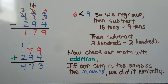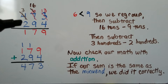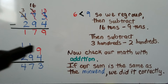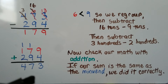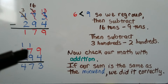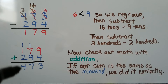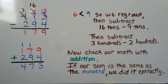Now we can check our math with addition. We can add 179 plus 294 and see if we get 473. 9 plus 4 is equal to 13 — we regroup the 10 and put the 3 in the ones place. 1 ten plus 7 tens plus 9 tens is 17 tens. We can group 10 tens into the hundreds place and put the 7 tens down here. We add the hundreds — we have 400, and it's the same as our minuend, so we know we did it correctly.